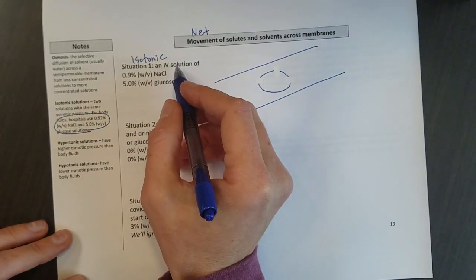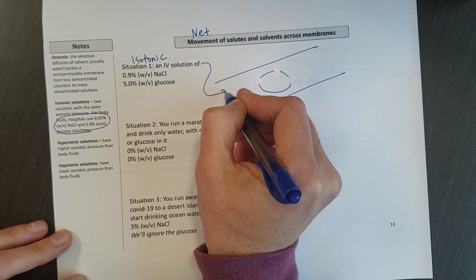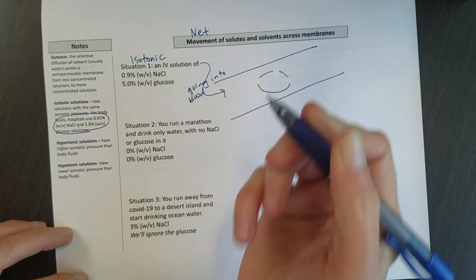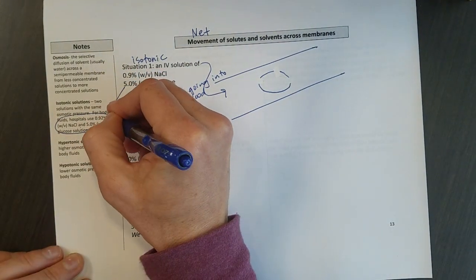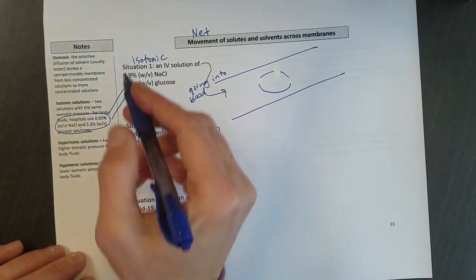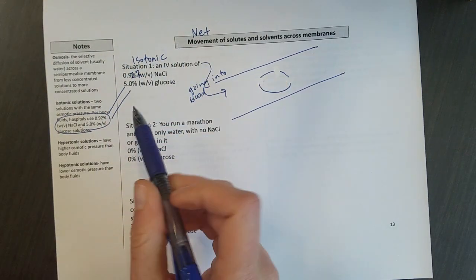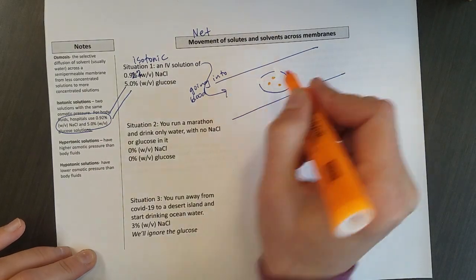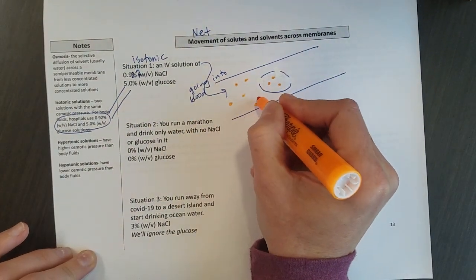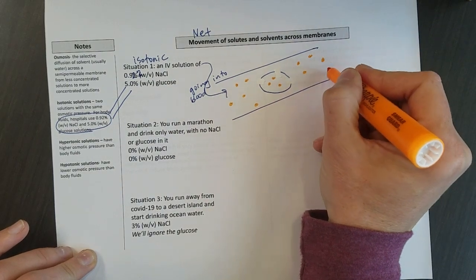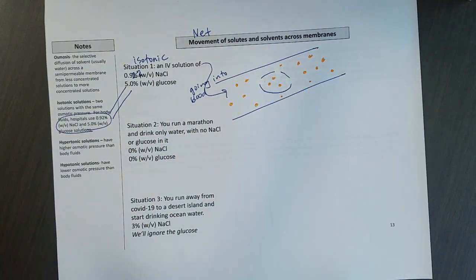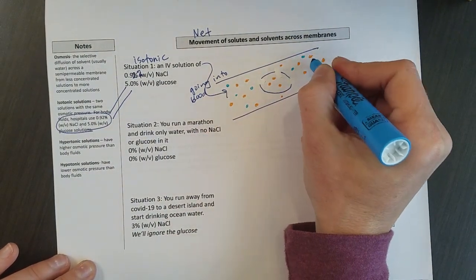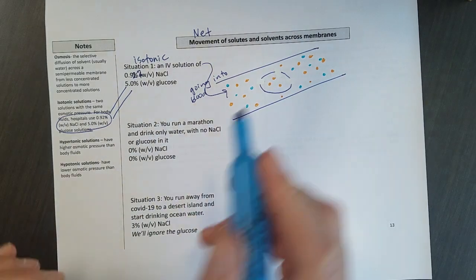These concentrations, this would be the IV solution. And the IV solution would be going into your blood. And these concentrations that are in the IV fluid match exactly with the concentrations of what's in the IV solution. So what does that mean graphically? I have my solutes outside, and the density of those or the concentration of them is roughly the same inside and out. When it's roughly the same inside and out, I say that this is an isotonic solution.